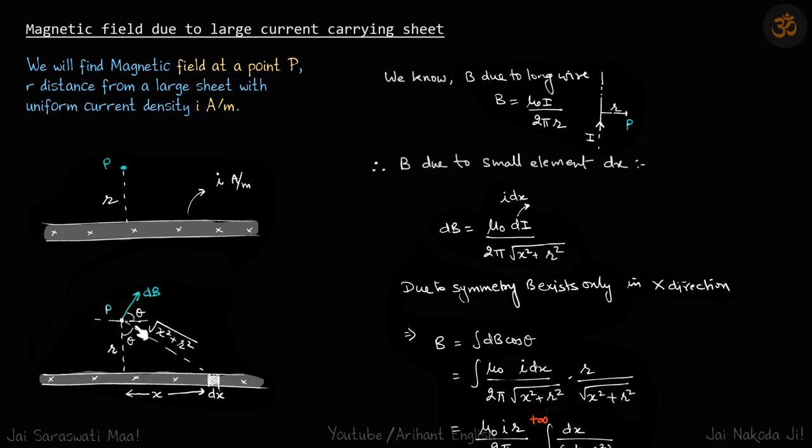The direction of the field, from the right hand thumb rule, should be perpendicular to this R vector. Due to symmetry, B exists only in the x direction.